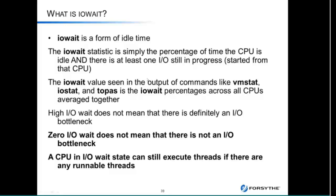I mentioned IO weight earlier and said I'd come back to it. There is a lot of confusion about high IO weight. If you see high IO weight, that does not necessarily mean you have an IO problem. And if you see zero IO weight, it does not mean there is not an IO problem. IO weight measures the percentage of time that a CPU was idle and there was an IO outstanding from that CPU. If there's no IO outstanding from that CPU but there is one from another, that CPU records zero.